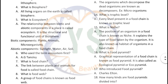What is ecosystem? The relationship between biotic and abiotic components in a place is called ecosystem. It is the structural and functional unit of biosphere. Biotic components means living things — for example, plants, animals, and microorganisms. Abiotic components means non-living things which are very much essential for the survival of living things.